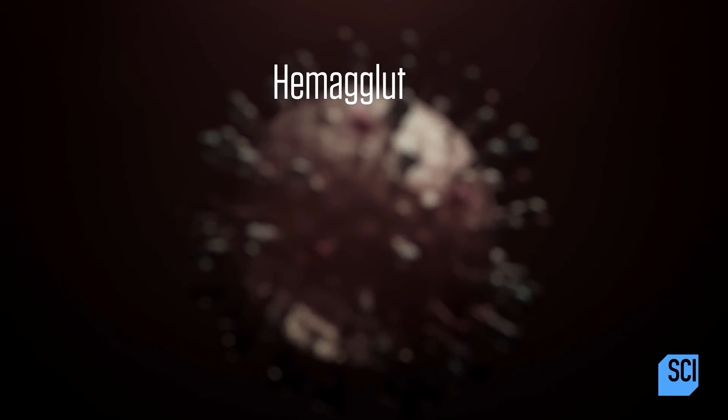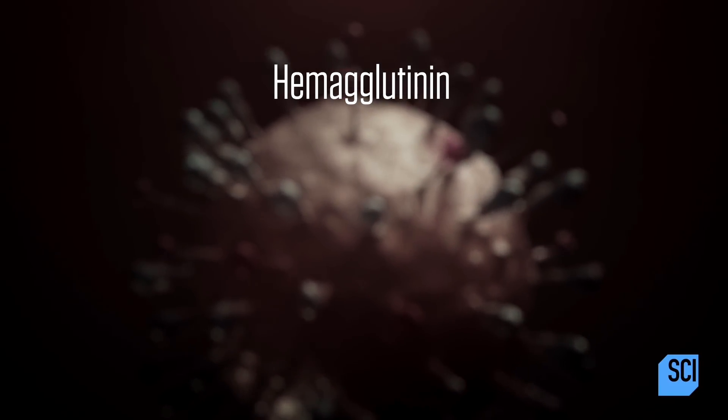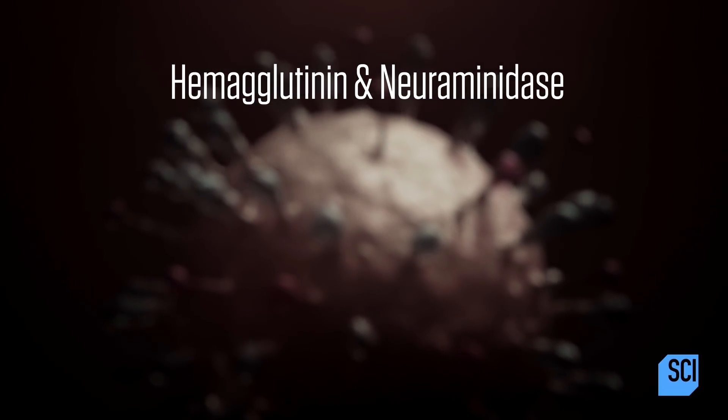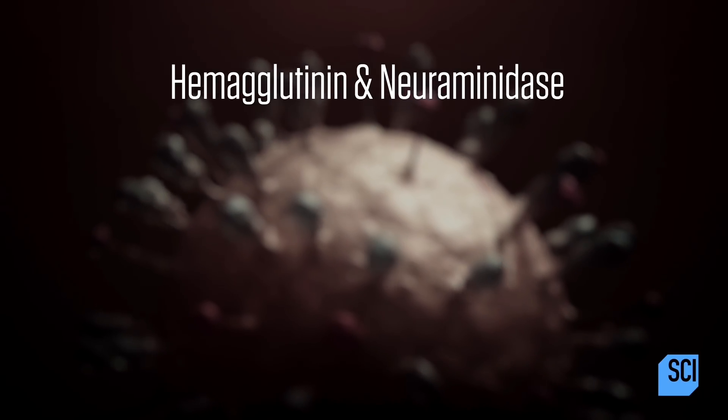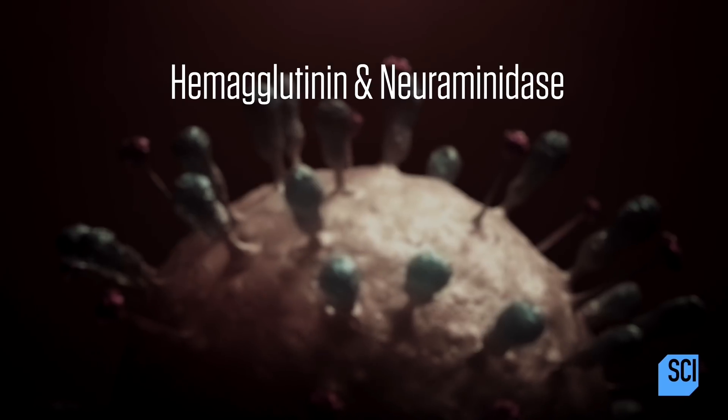One protein is called hemagglutinin. It allows the virus to get into the cells it wants to infect. The other protein, called neuraminidase, has the opposite effect. It allows the virus to escape as newly made viruses are being released from cells.